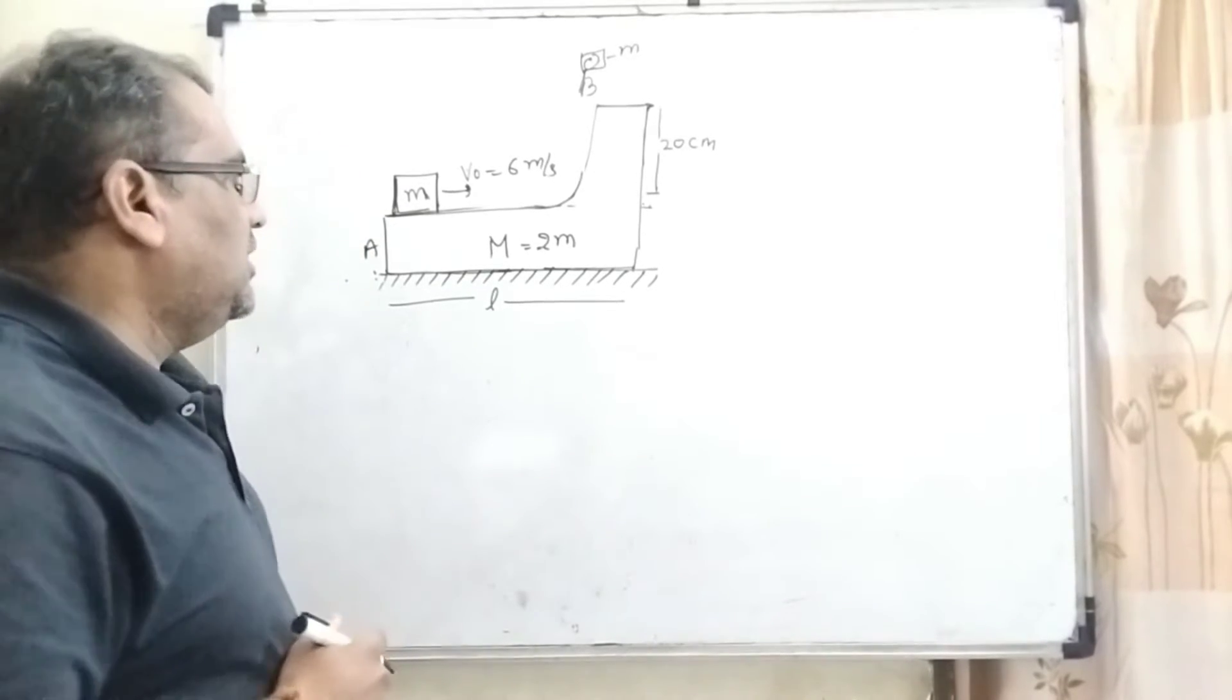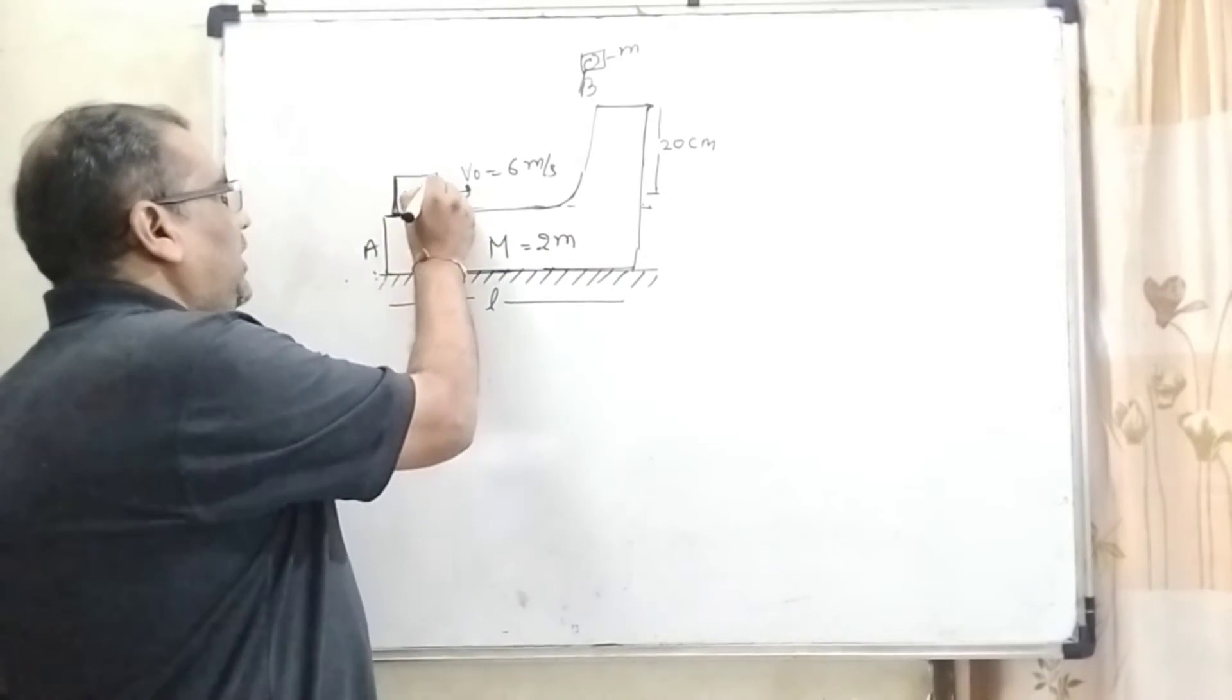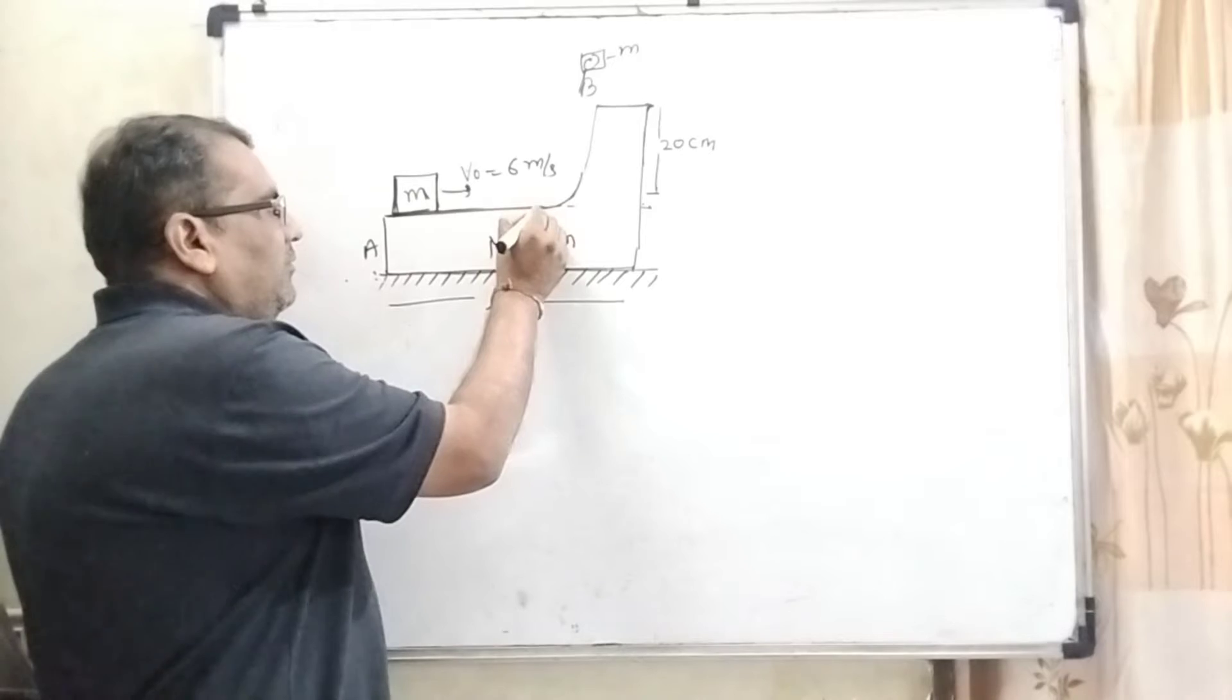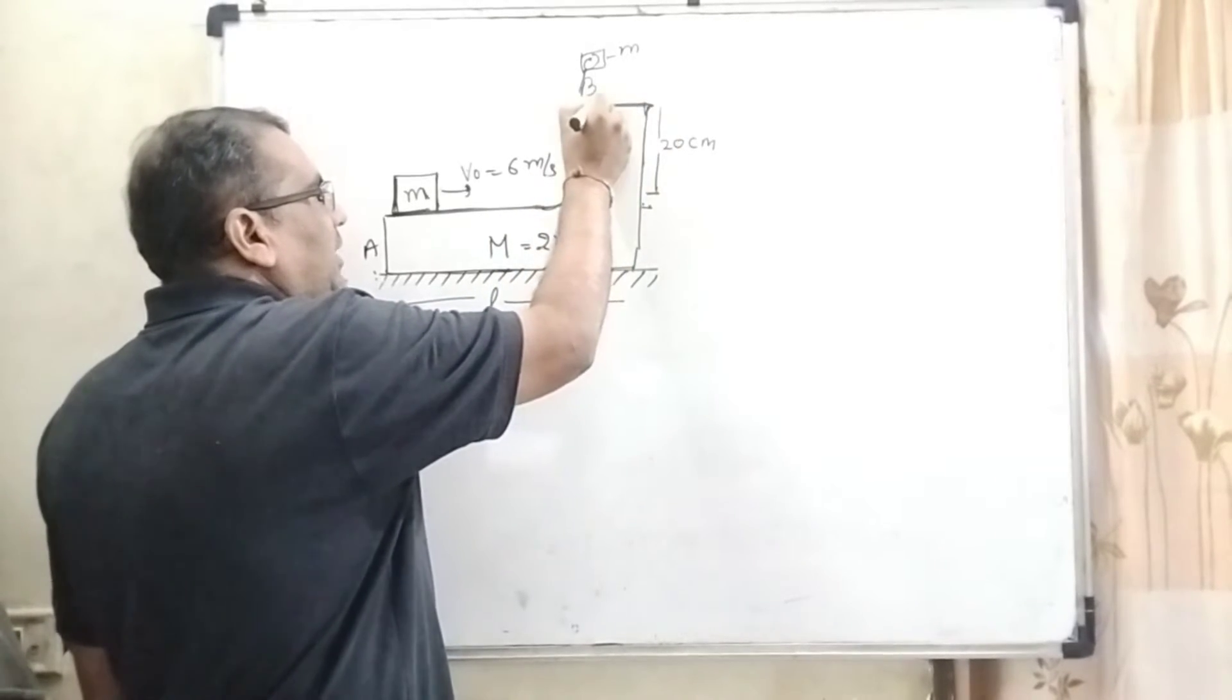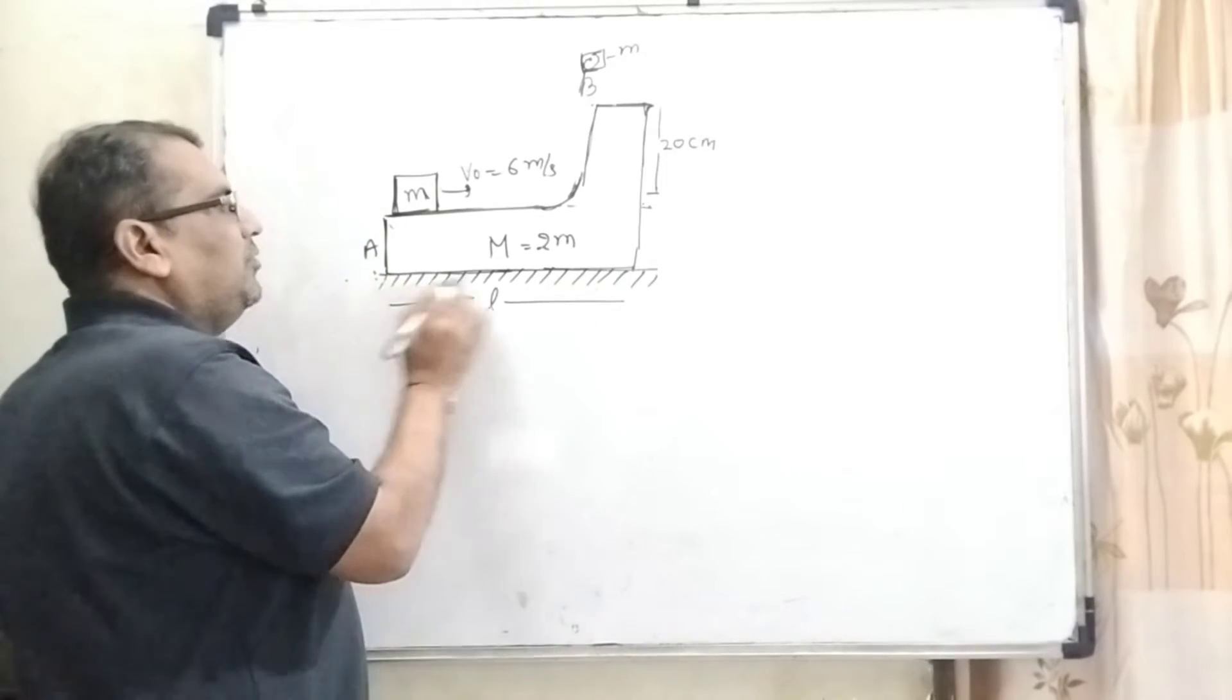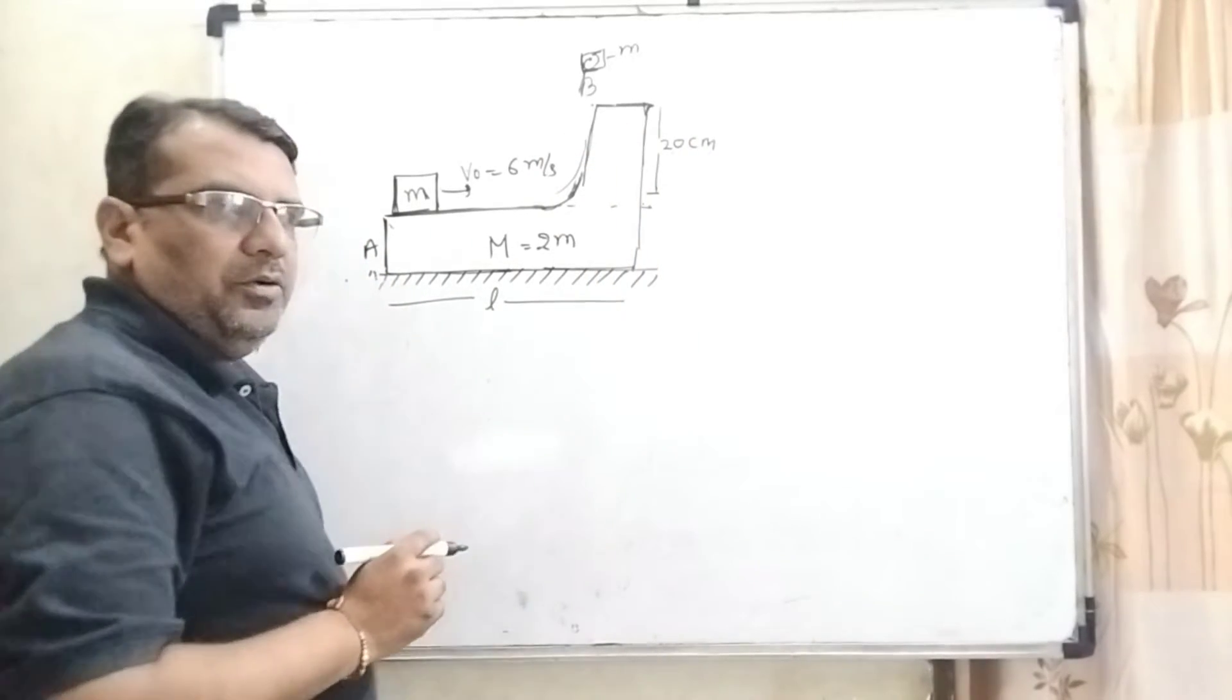Let us see what the question says. Here we have given a wedge which having the mass capital M equal to 2m. And a block kept on A and its velocity is 6 meter per second when we have to give some impulse. And when it is stuck to this surface, then it reaches up to the height B. And here another particle which having the same mass m stuck and then fallen down. And we have to calculate this l where it is sliding and fallen down at the position A. And its height is given 20 centimeter.